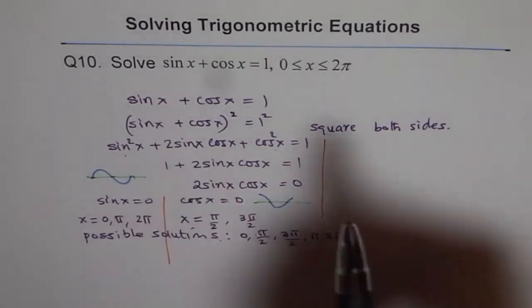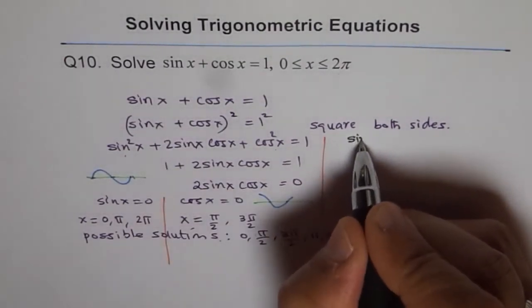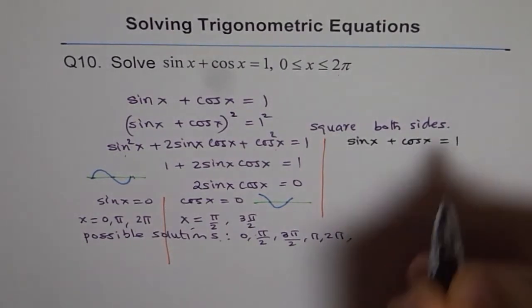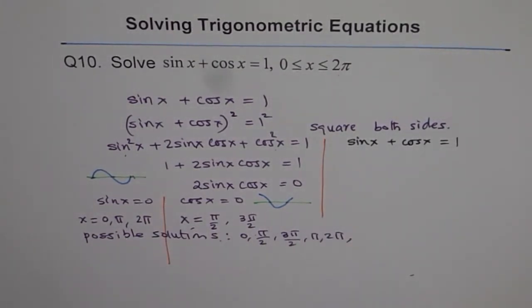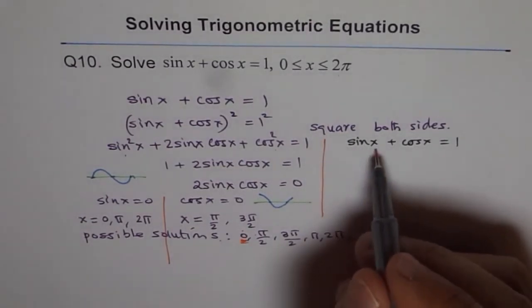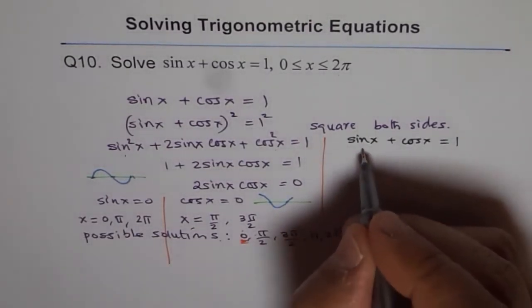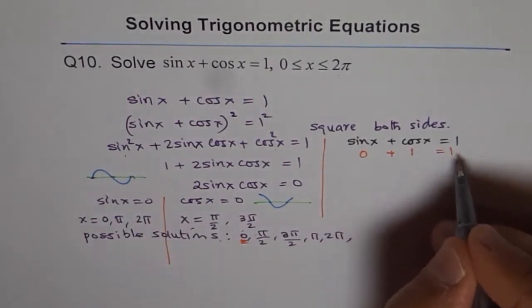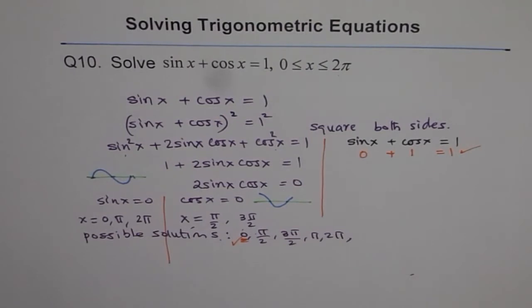Our equation is sin x plus cos x equals 1. If we plug in 0, let's check the first value 0. What is sin 0? Sin 0 is 0. And what is cos 0? Cos 0 is 1, and so we get 1. So this is correct. We say 0 is correct.